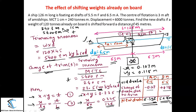This is how we calculate the new draft when cargo already on board is shifted in the forward or aft direction. In this numerical the cargo was shifted forward 45 metres. I hope all of you understood this question. We will do more numericals on the same topic in the next class. Thank you very much.